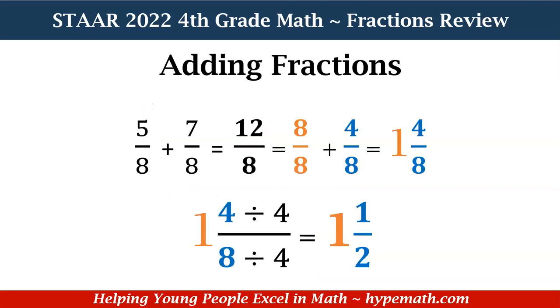Let's look at another example. We have five-eighths plus seven-eighths. My denominators are the same, so all I need to do is add my numerators. Five plus seven is equal to twelve, so twelve-eighths is my answer. Whenever you have a numerator with a value greater than the denominator, that is called an improper fraction. So I need to reduce my fraction. What I'm going to do is separate this fraction.